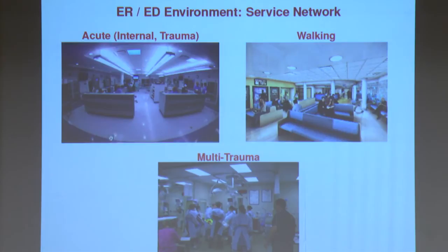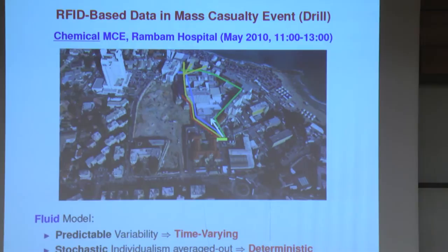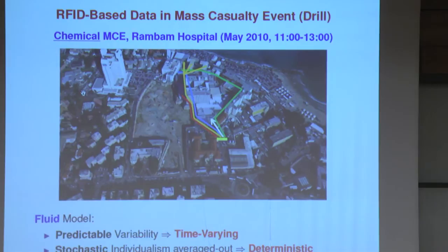This is the reality of emergency departments as depicted through a flow chart or process map. We analyzed such worlds in two scenarios: a normal scenario and special times such as mass casualty events. Here is one mass casualty event that took place at Rambam not that long ago. What we did there was wire patients and medical staff with RFID tags so that you can track their location continuously, and we tried to develop models that help manage those mass casualty events in real time.